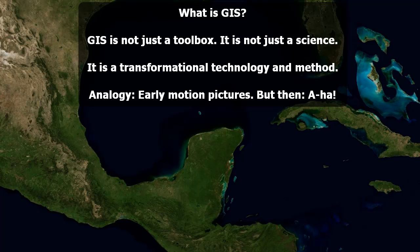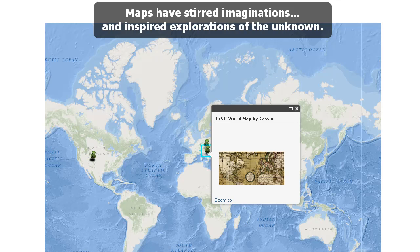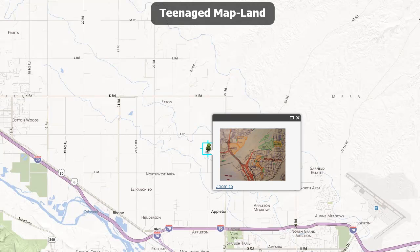Yes, we can look at where places are — capitals, coastlines. But GIS is much more than learning where things are. GIS has to do with the interaction of things like coastal erosion and longshore sediment transport, and where people live and how vulnerable they are to storm surges, for example. Maps have stirred imaginations and inspired explorations of the unknown for centuries. Maps have always been powerful sources of information, and it's no different nowadays with the advent of GIS.